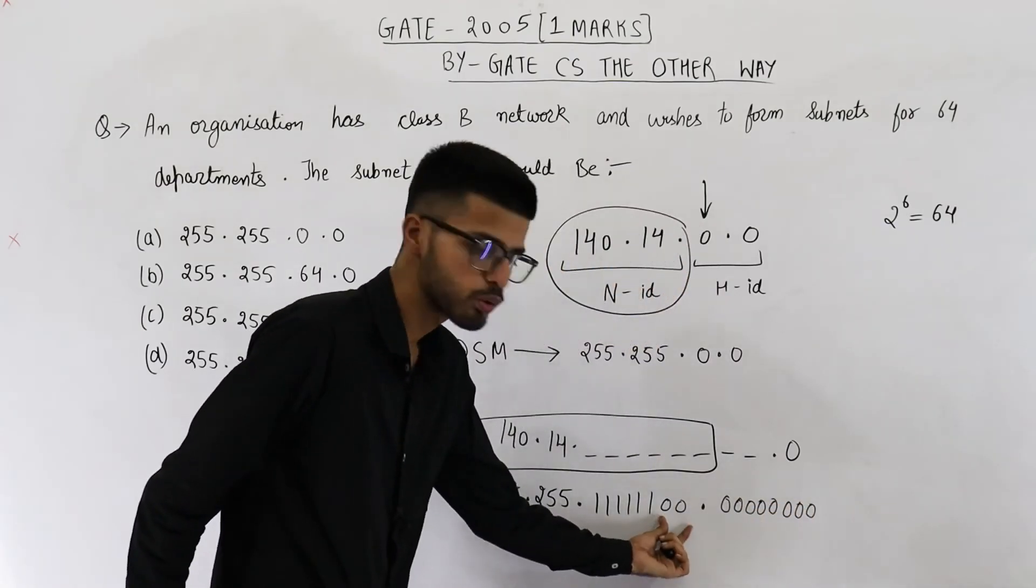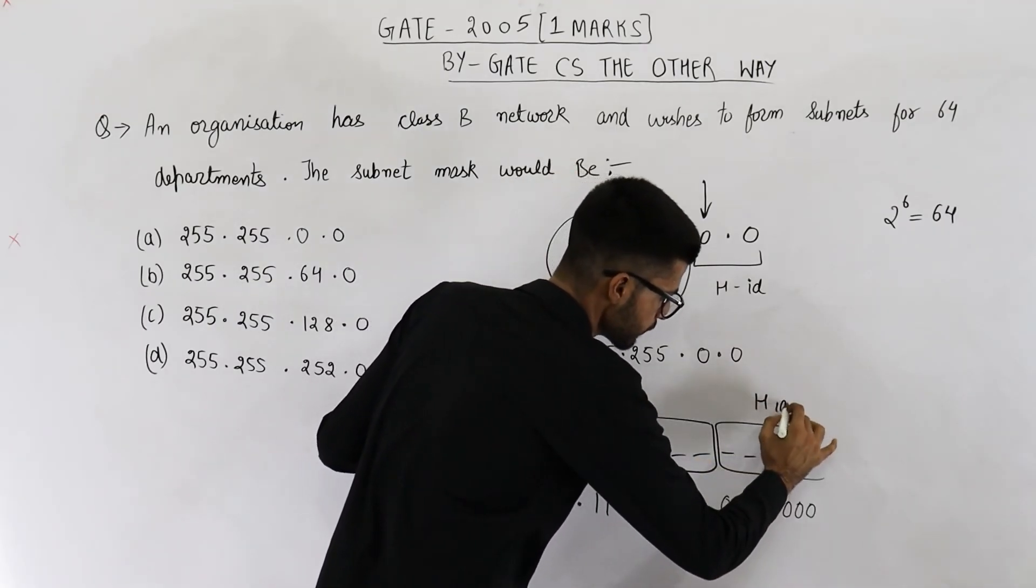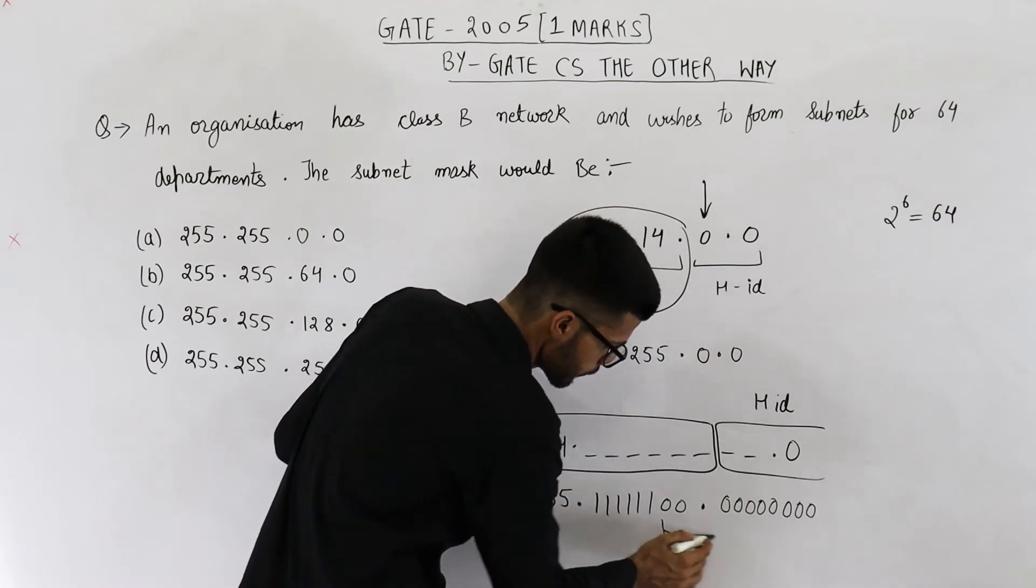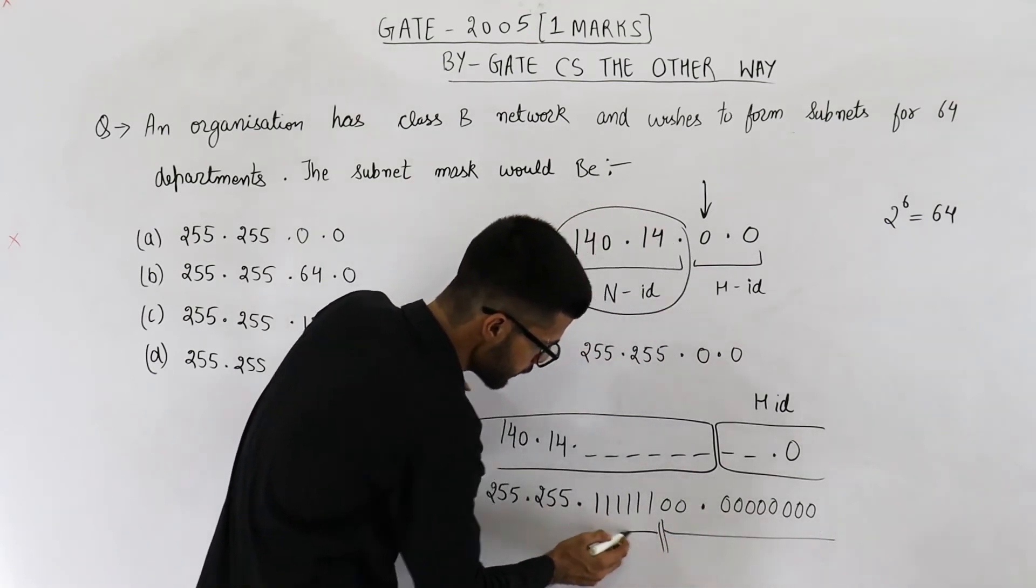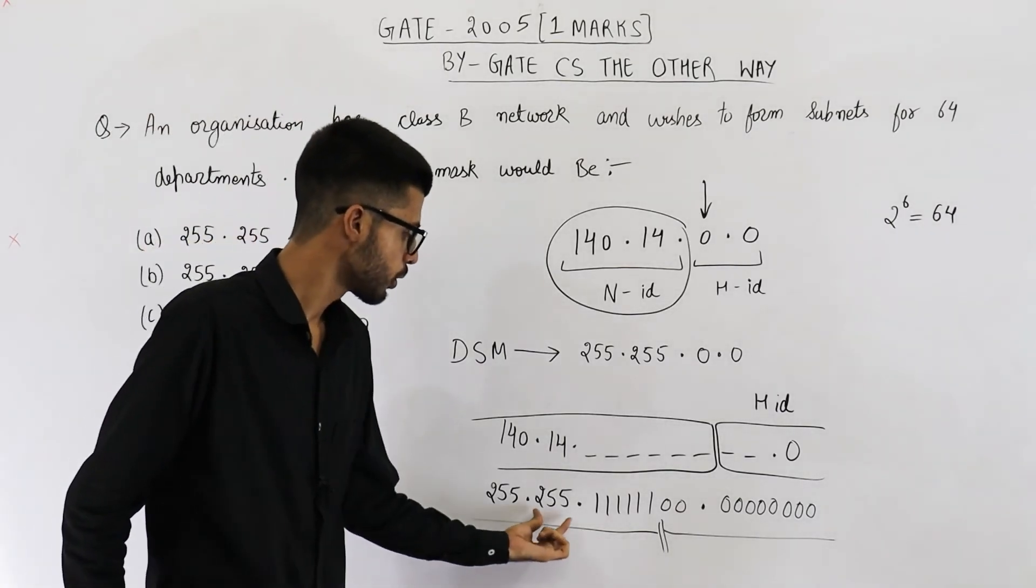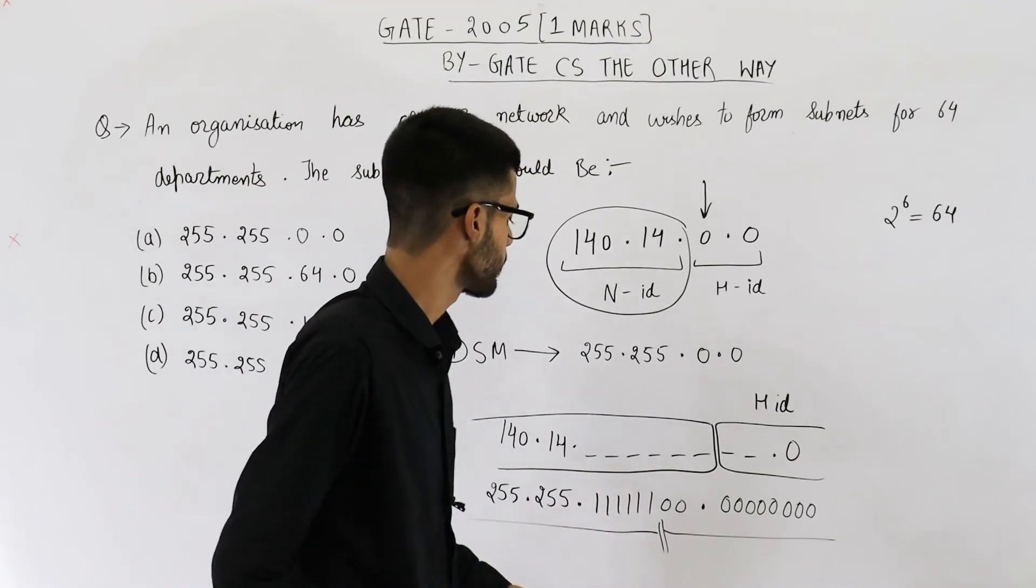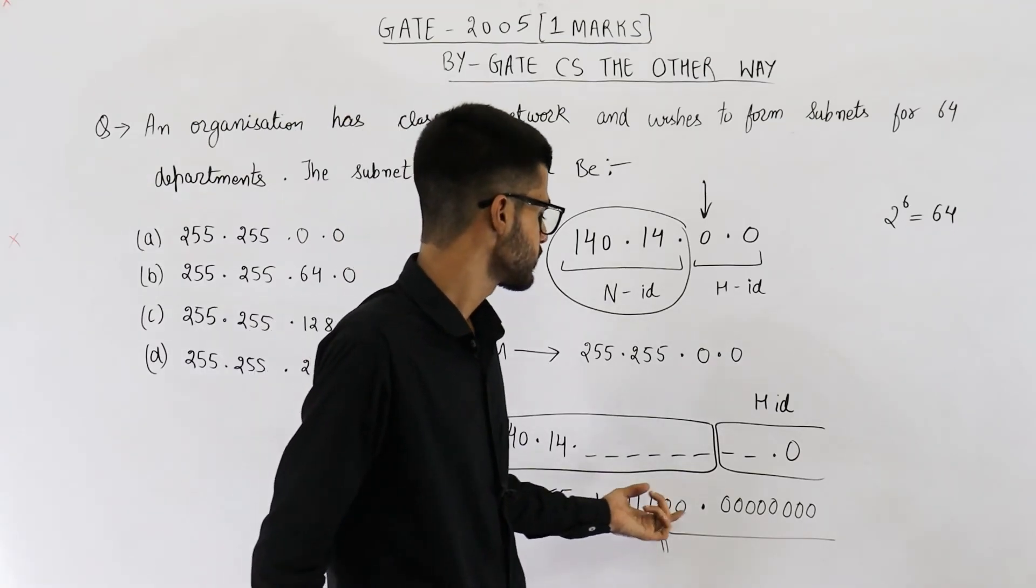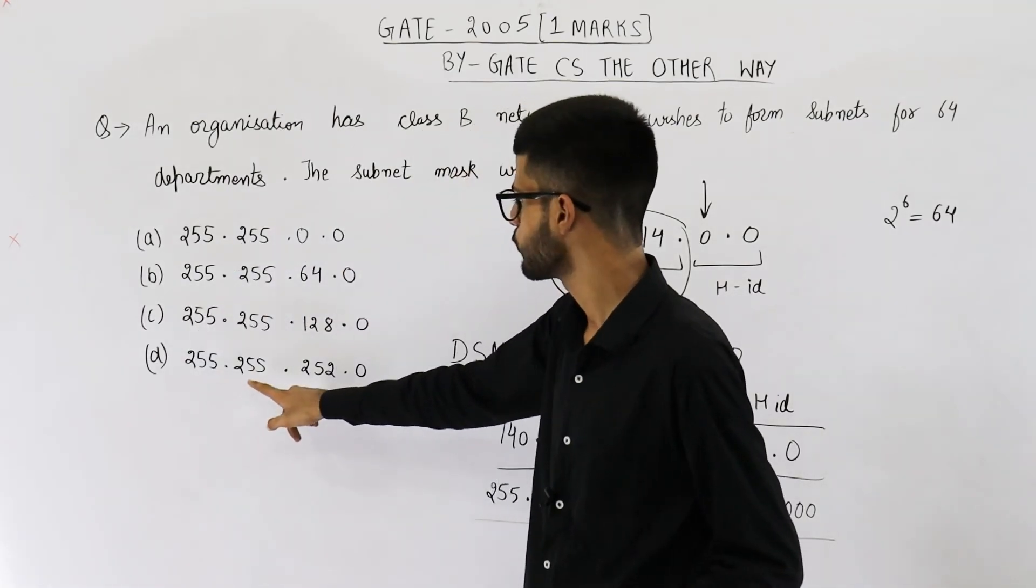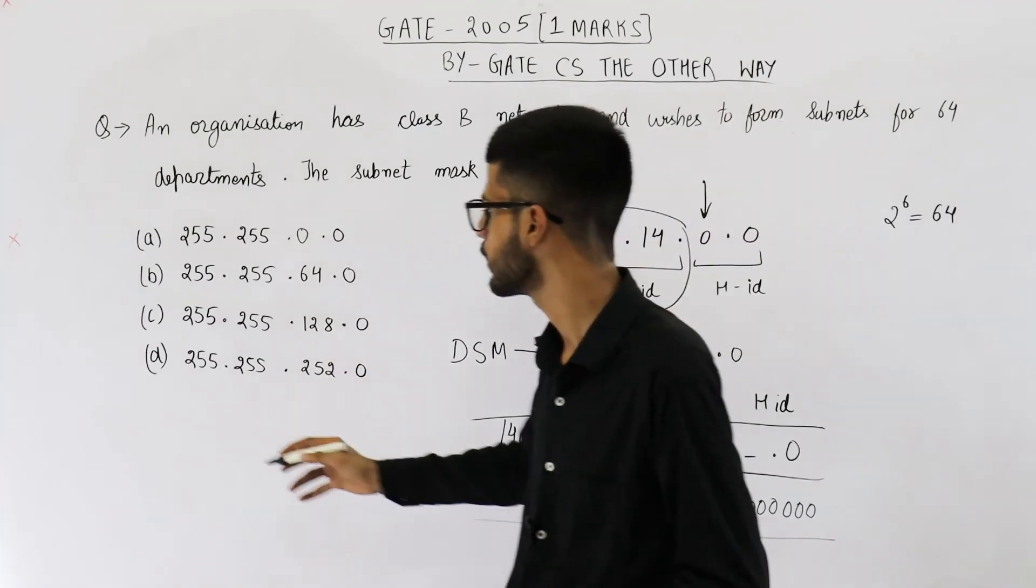See why we have two 0s here? Because this is the host ID. For host ID, we are having 0s. And for network ID, we are having 1s. So just find out what is this number. It will be 255.255, 63 into 4, that means 252. So the answer is 255.255.252.0. Option D is correct.